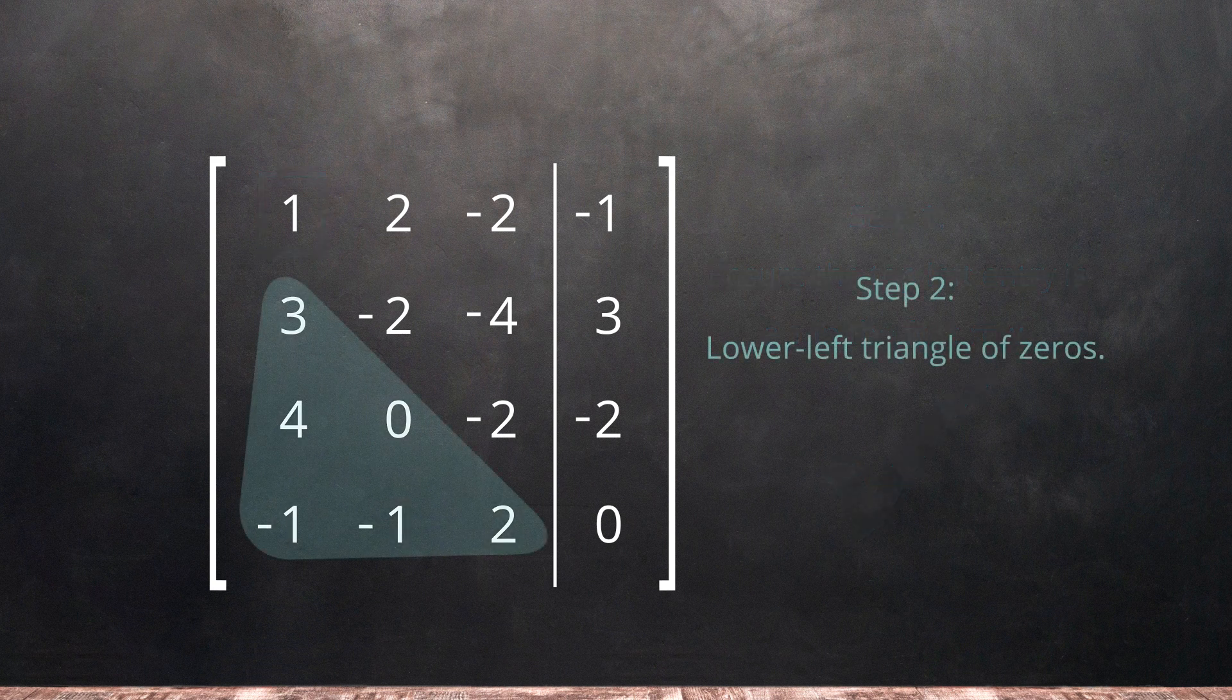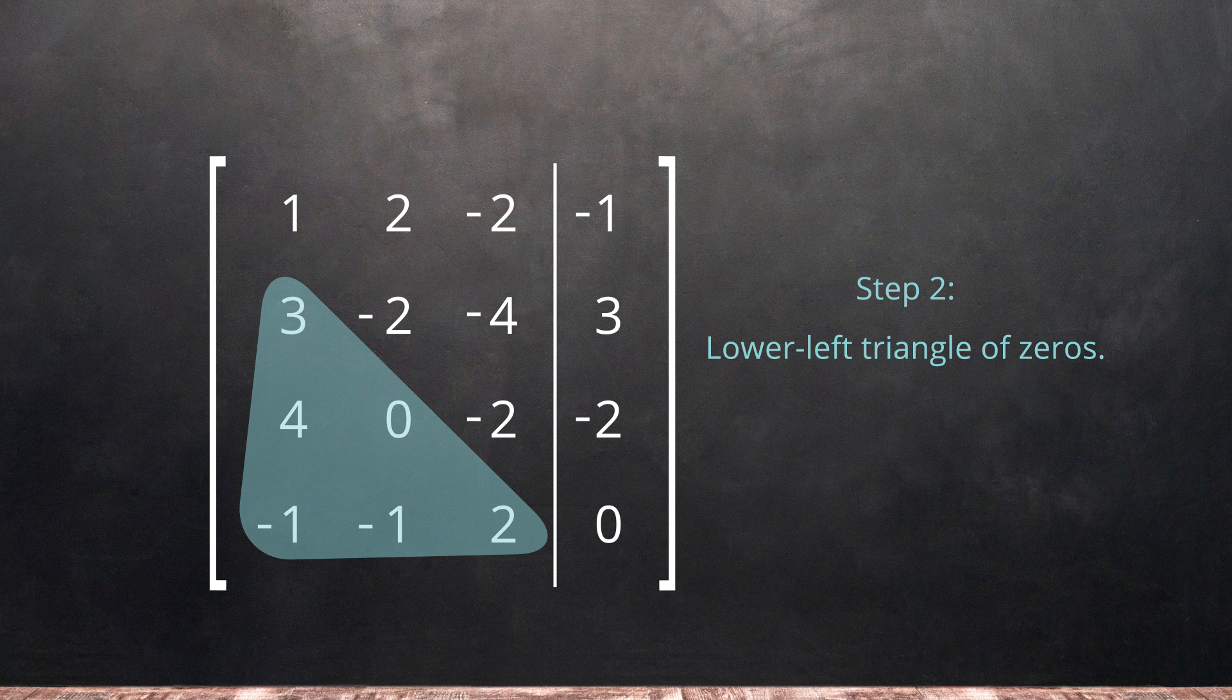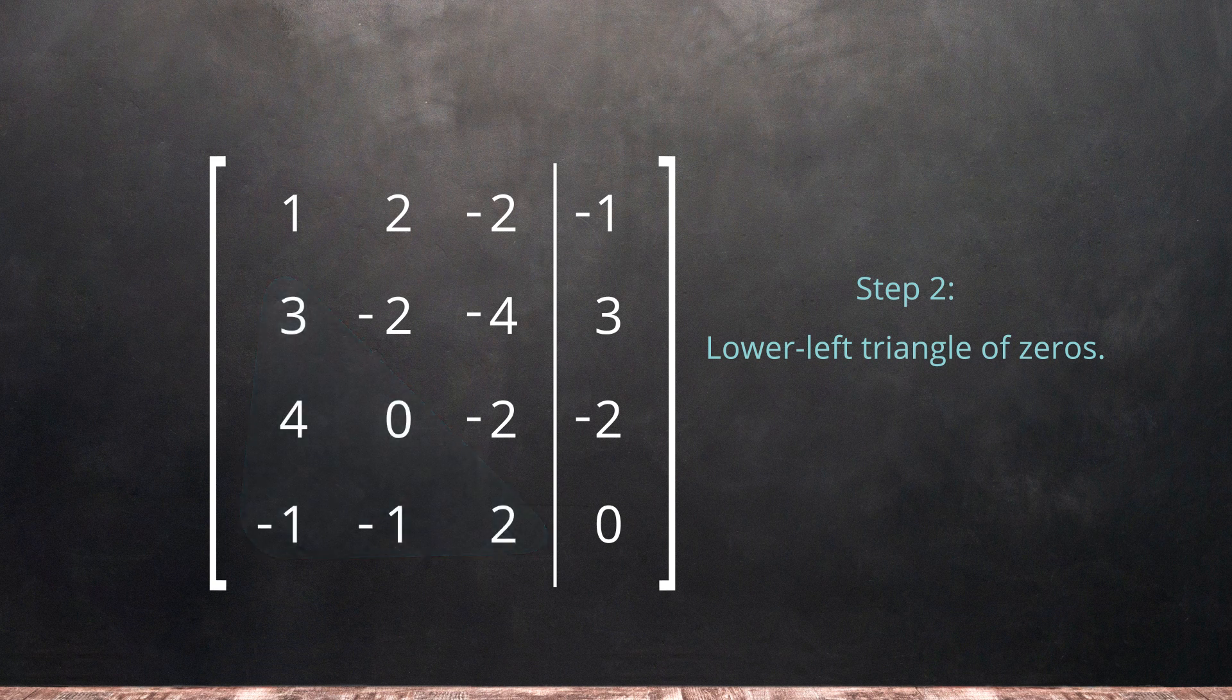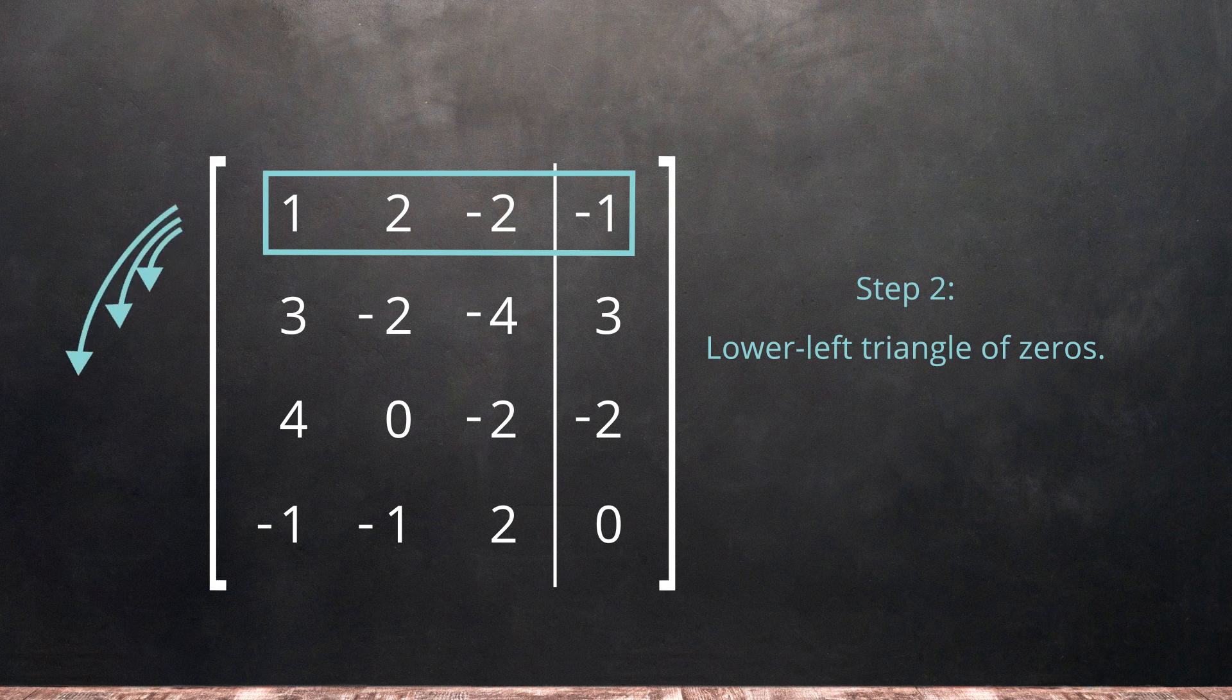Step 2: Create a lower left triangle of 0s. We will do this one column at a time and use the first row as our pivot to create 0s in the first entries of every row below it.